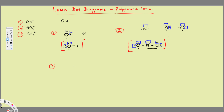Now let's do BH₂ plus. Put the boron — boron has three valence electrons: one, two, three. Each hydrogen has one valence electron, and hydrogen can only have a maximum of two electrons. We connect one of boron's dots with each hydrogen — one dot to this hydrogen, one dot to the other hydrogen. We are left with one extra electron on boron.